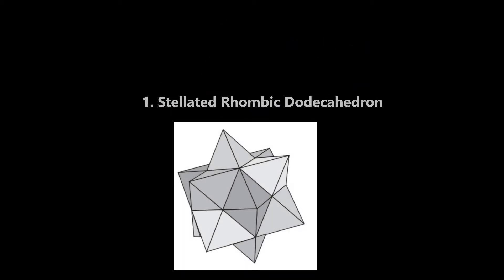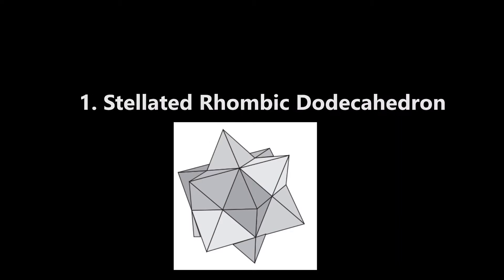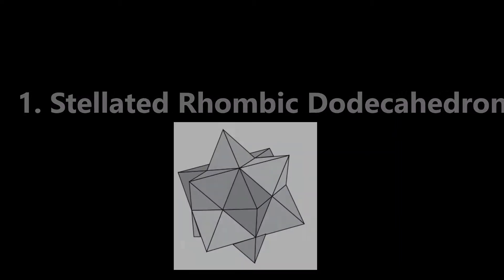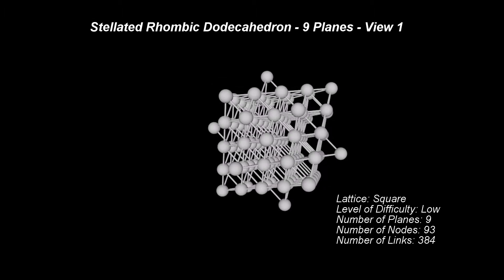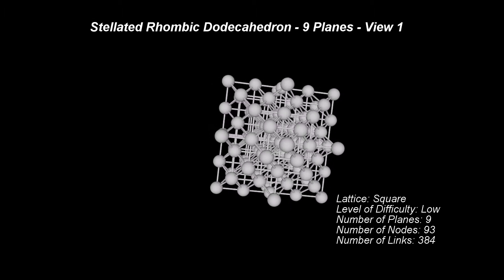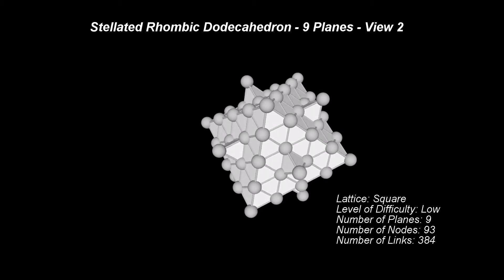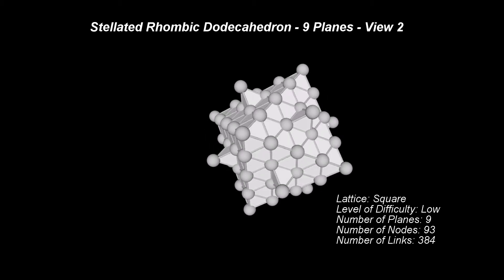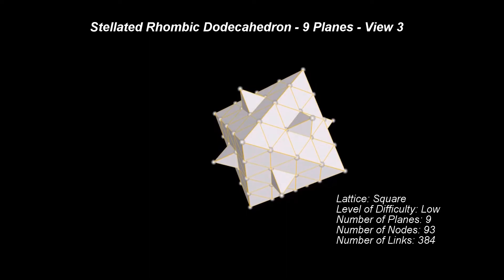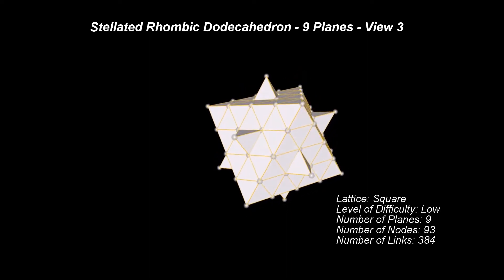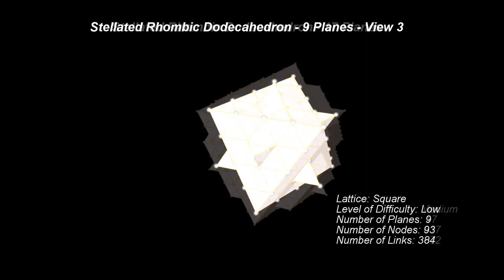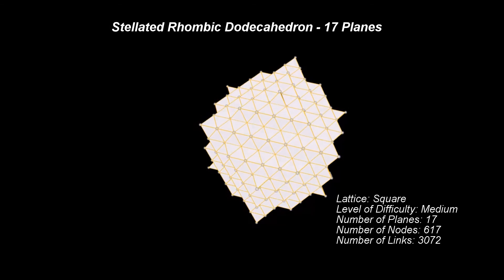The first one is the stellated rhombicododecahedron. This solid can be obtained from a rhombicododecahedron by continuing its surfaces until they meet. Keeping with our established approach, we will look into the evolution of this pattern in CPS. As the number of nodes increases, the shape becomes more outlined and the solid better defined.